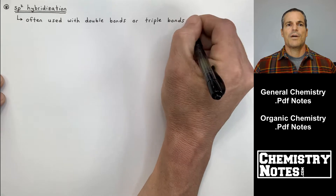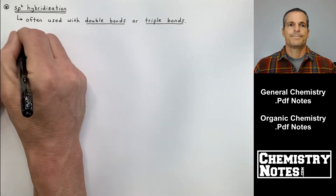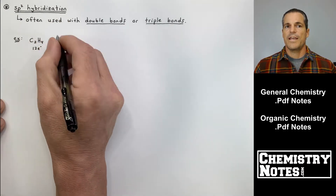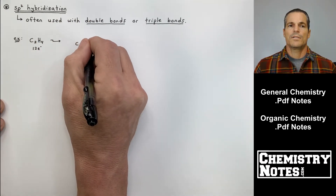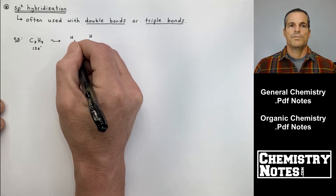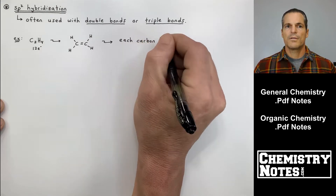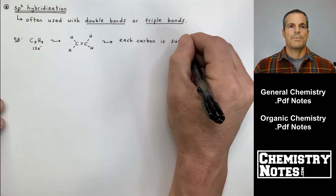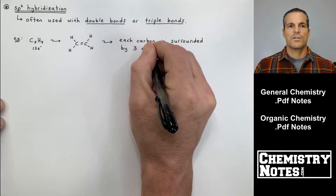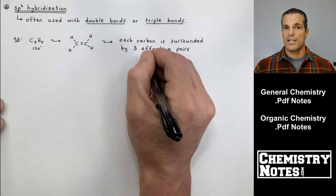sp2 hybridization is often used when you have double bonds or triple bonds. The example we used for sp3 was the tetrahedral CH4; the example we're using for sp2 hybridization is C2H4. We'll use ethylene as an example — you count up all the valence electrons, come up with the Lewis structure, and make sure you have 12 electrons at the end, as we discussed in section 8.